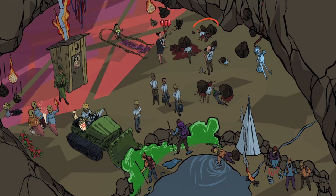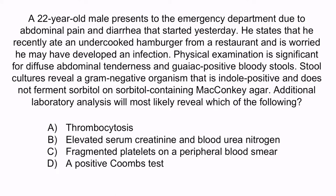Recall from physiology that elevated serum creatinine and blood urea nitrogen are both laboratory findings that indicate renal damage. The shiga-like toxin produced by the organism causes microthrombi to form in blood vessels, which results in schistocyte formation and renal failure. A is incorrect because HUS causes thrombocytopenia via platelet consumption, not thrombocytosis. C is incorrect because the platelets are not fragmented — red blood cells are. Schistocytes are fragmented RBCs that form as RBCs attempt to pass through microthrombi in blood vessels. D is incorrect because a positive Coombs test indicates that antibodies are responsible for the hemolyzed red blood cells, but here the RBCs are mechanically destroyed due to microthrombi formation, not antibody-related destruction. So again, the correct answer is B: elevated serum creatinine and blood urea nitrogen.